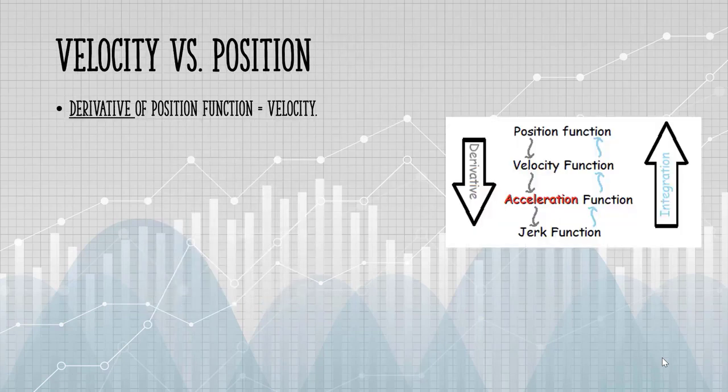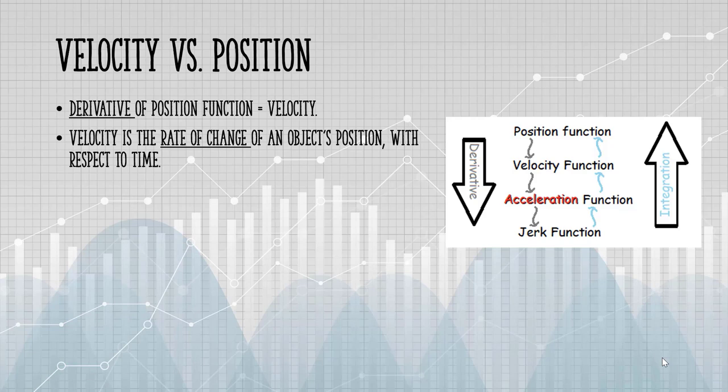Taking the derivative of the position function gives you the velocity of an object moving in a straight line, assuming there isn't any air resistance. To put this another way, the velocity of an object is the rate of change of an object's position with respect to time.